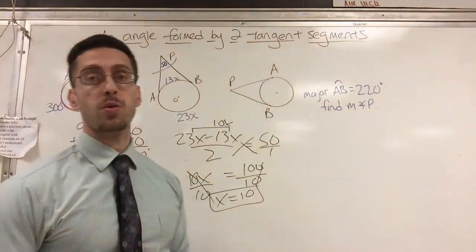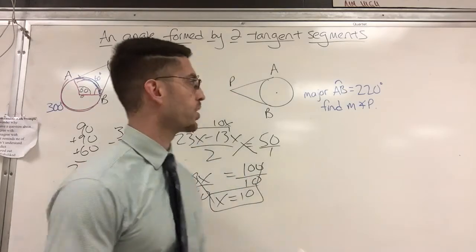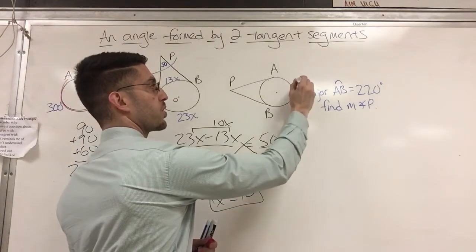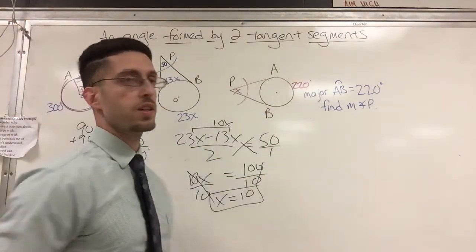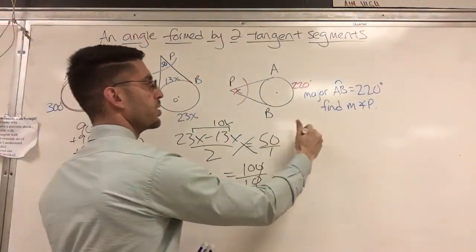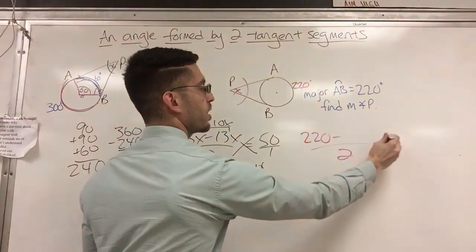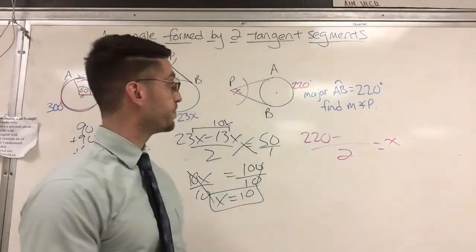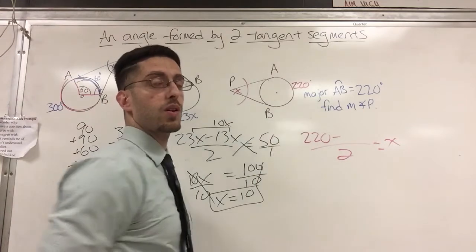Major arc AB is 220. This might actually show up on a test, so you have to use all your knowledge here. If major arc is 220, that means the 220 goes over on this side. And now you want me to find angle P, so my x goes there. Major minus minor divided by 2. Major minus minor divided by 2 equals my x. If only I knew what the minor was, I'd be good. Oh, wait a minute. Full circle, okay? You got to know some stuff. They're not always going to be clear with you.